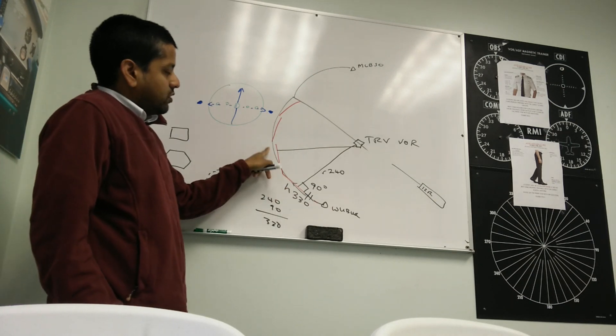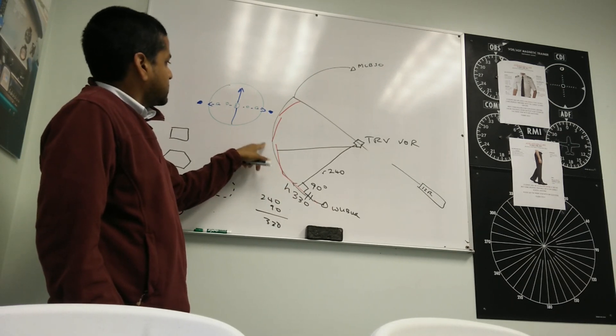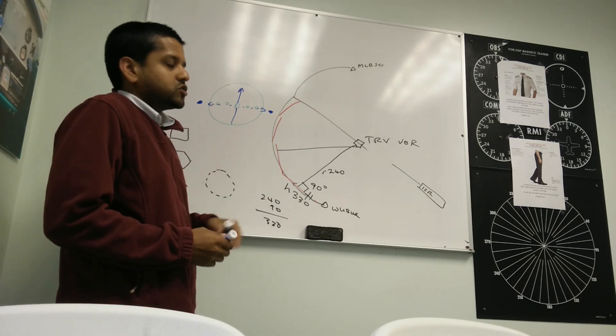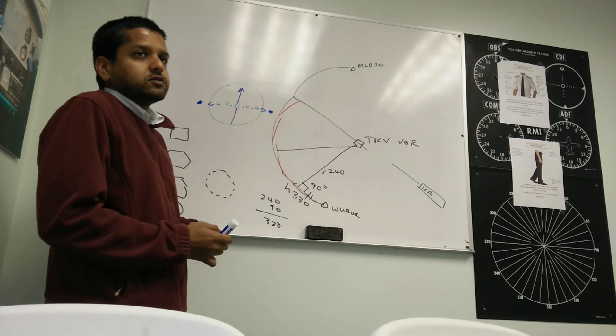As you keep going around the arc, your radial changes. So you have to keep changing your heading. So you have to keep re-centering the needle. Check the heading. It's called twist 10, turn 10.